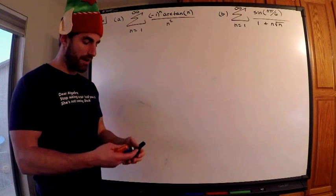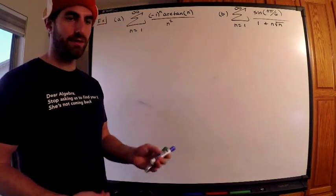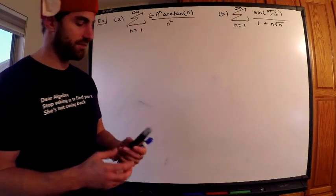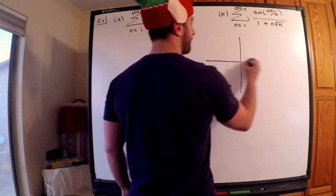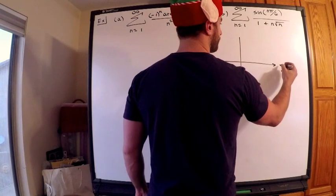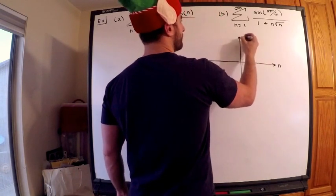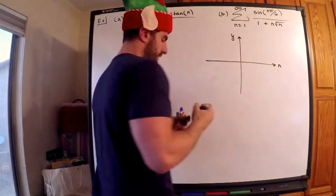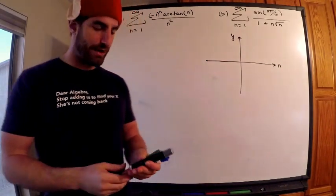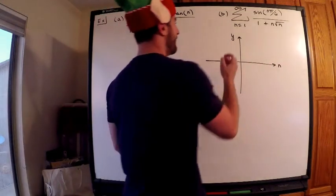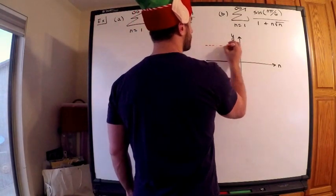In fact, you should absolutely know the graph of arctan. This is probably one of the few inverse trig functions you do need to know the graph of. Arctan looks like this. I'm going to draw this graph for a couple of reasons. Let's say this is n, let's say this is y. Arctan, in terms of its range, its range is between negative pi over 2 and pi over 2.